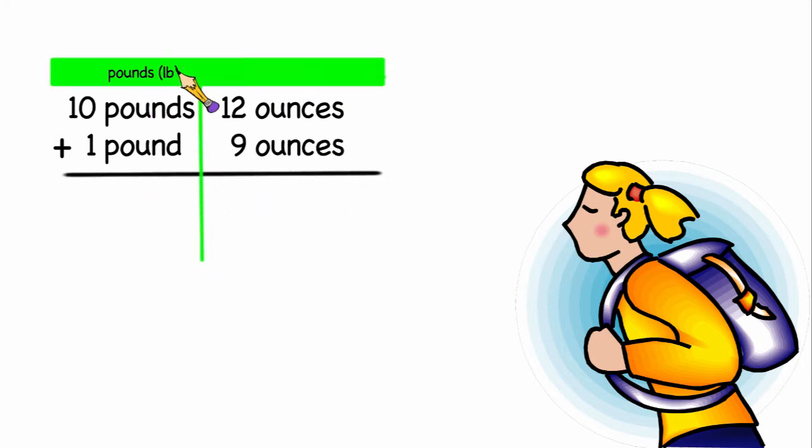Again, I'm adding both pounds and ounces. And I need to do those separately. So I have a total of 11 pounds and 21 ounces.